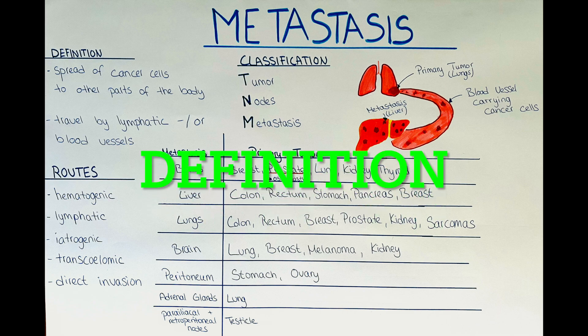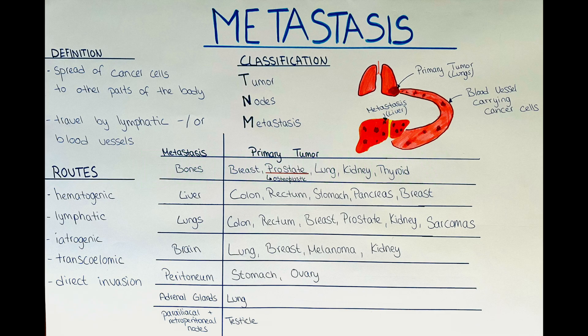A metastasis occurs when cancer cells spread from their original location, known as the primary tumor site. From here they spread to other parts of the body. This spread occurs when cancer cells detach from the primary tumor and then travel through the blood system or the lymphatic system. Once these cells reach distant organs or tissues they continue to grow there, and that's what we call a metastasis.